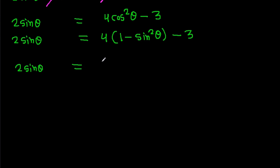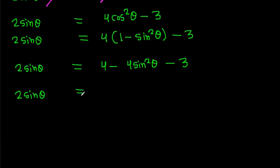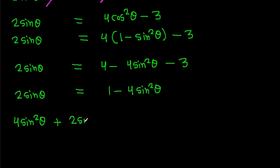This gives 2 sin theta equals 4 minus 4 sin squared theta minus 3, which is 1 minus 4 sin squared theta. So 4 sin squared theta plus 2 sin theta minus 1 equals 0.